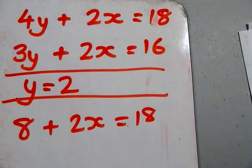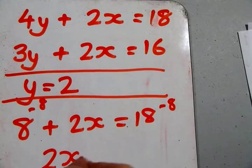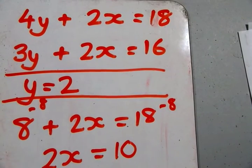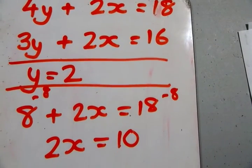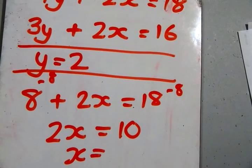If we subtract 8 from both sides, 2x equals 10. If 2x equals 10, x must equal 5.